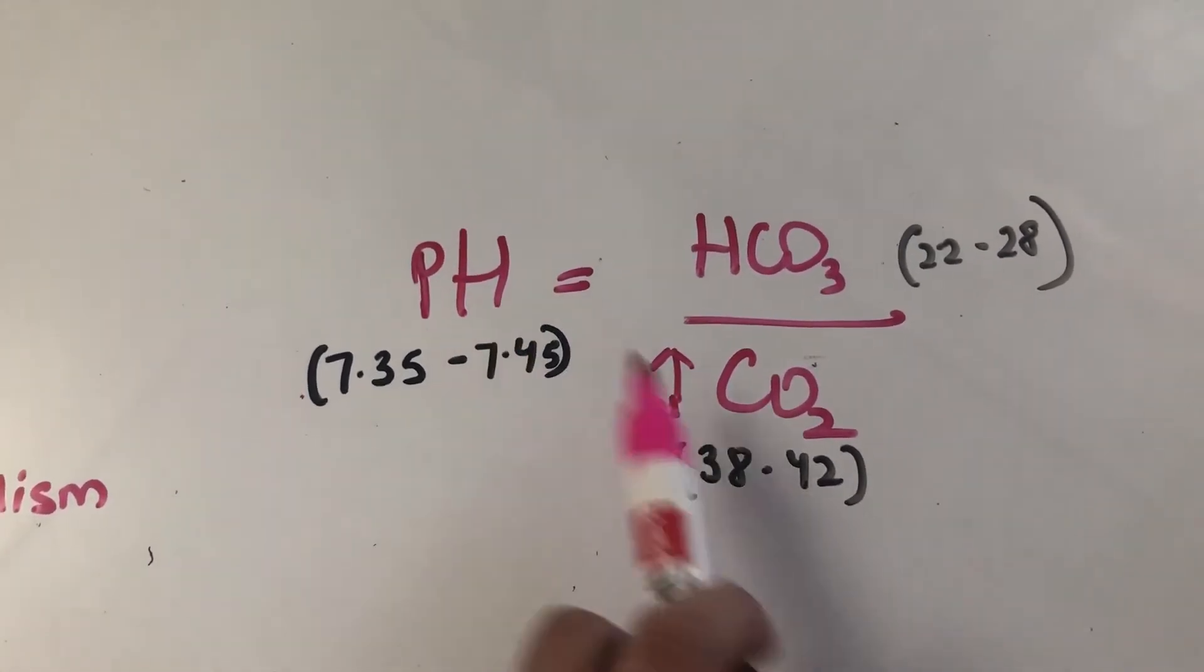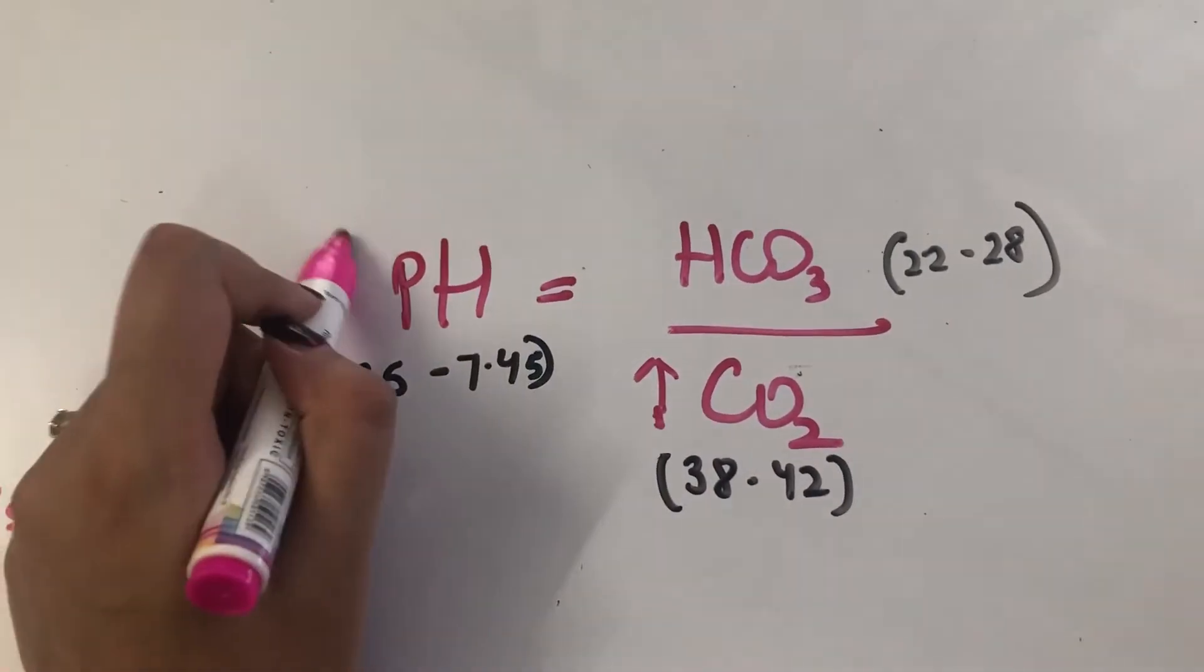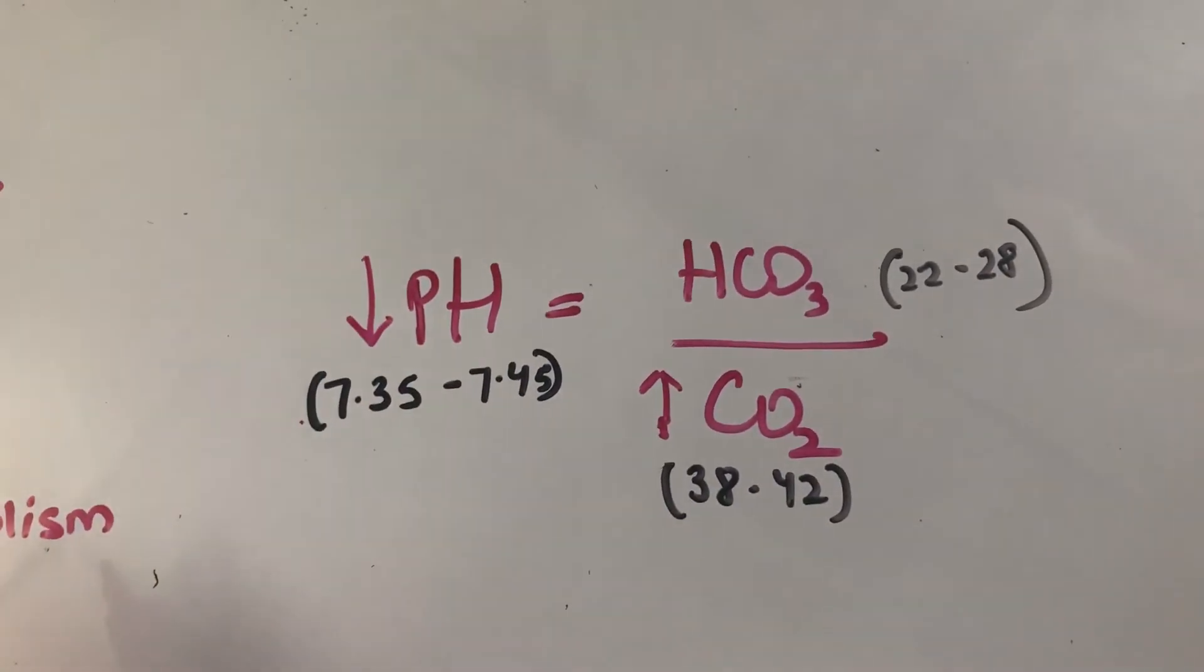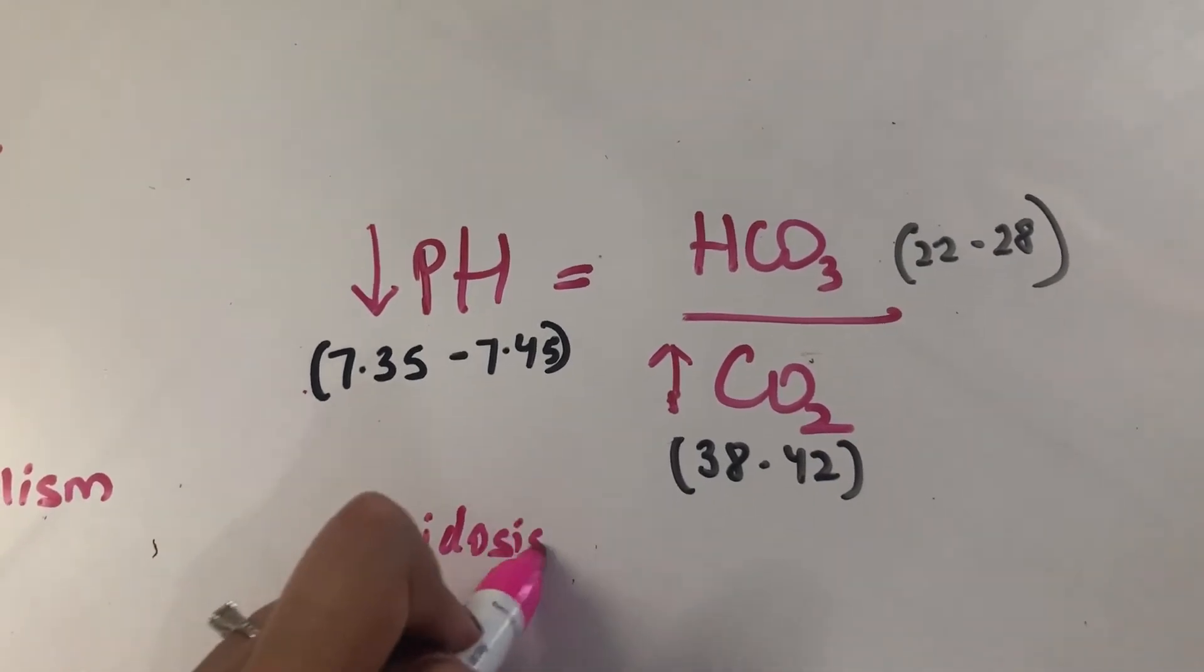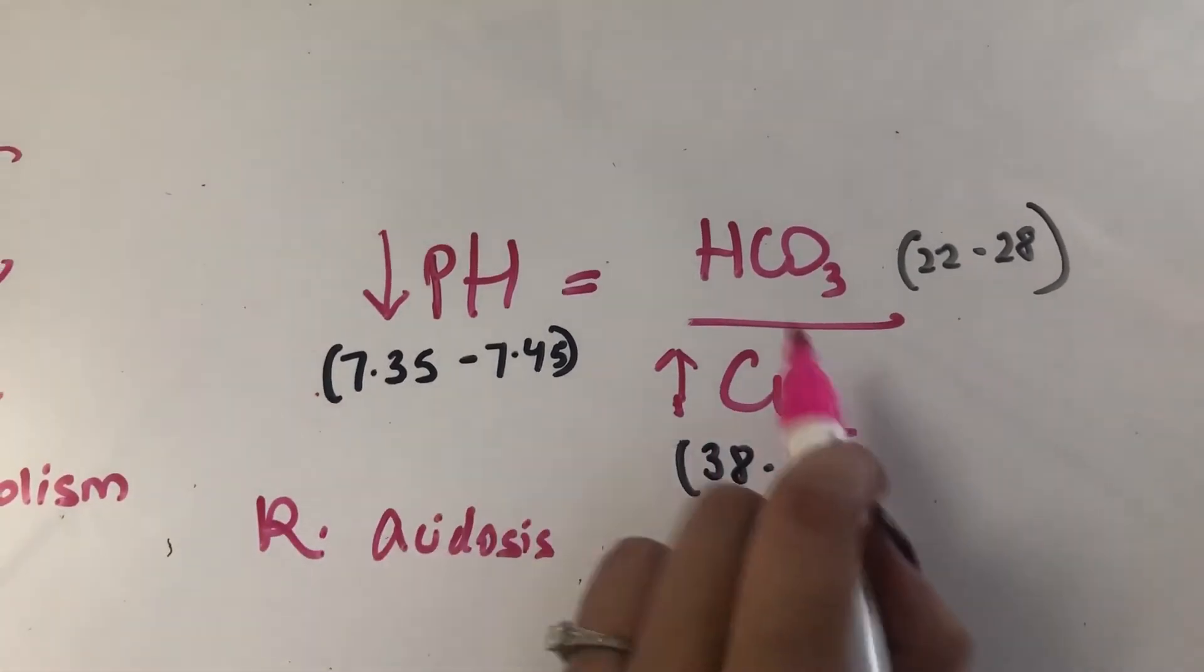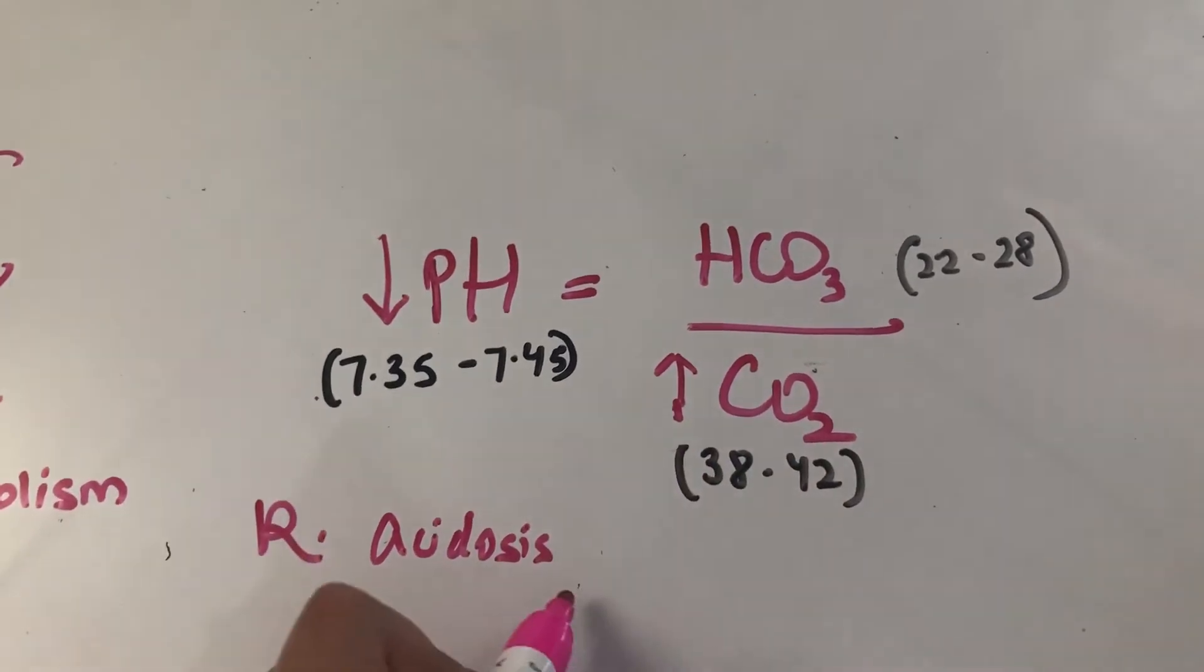They're inverse. So the pH comes down, and it becomes acidosis. And what kind? Respiratory. Because this is happening due to carbon dioxide primarily.